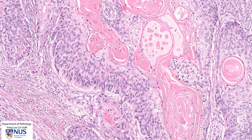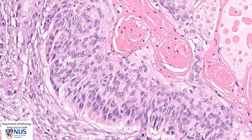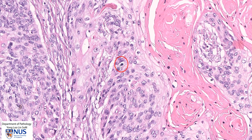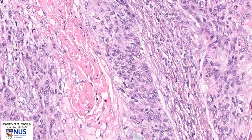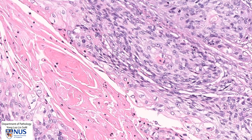At higher magnification, we can appreciate the malignant features of the cells, namely nuclear pleomorphism. We have quite significant variation in size and shape from one nucleus to another — for example, this very large nucleus is considerably larger compared to this smaller nucleus. Some nuclei are rounder, some are much more irregular, and many contain prominent nucleoli. It is also very easy to find mitotic figures — there is one here, and also one here, and another one here.